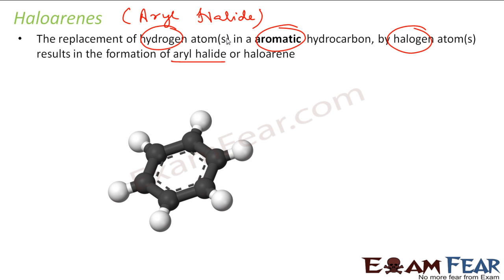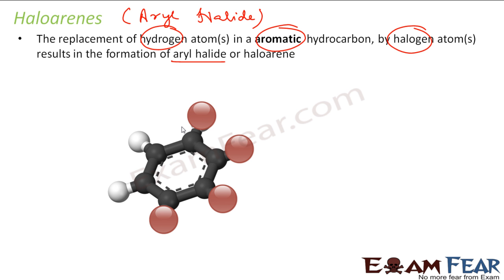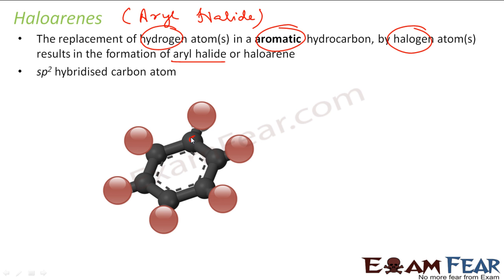For example, take benzene and replace one hydrogen with chlorine — that gives a haloarene or aryl halide. You can keep replacing more hydrogens with more halogens, and each resulting compound is also an aryl halide. Please note: all the carbons linked to the halogens in these aromatic compounds are sp2 hybridized, because they have three bonds — one double bond — making them sp2.